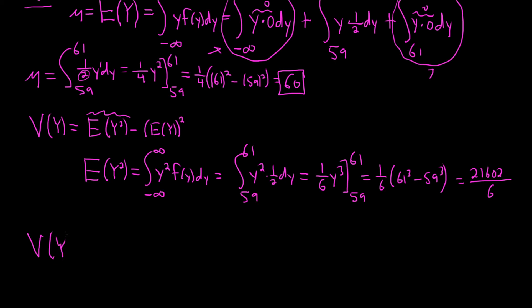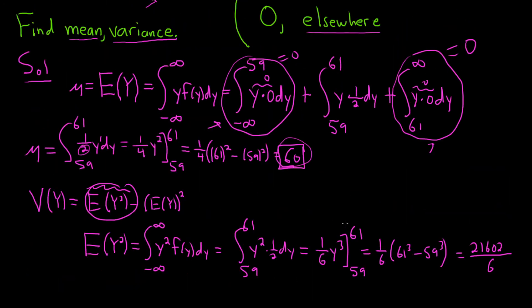Now for the variance, it will be this piece here, which we worked out as 21602 over 6, minus the expected value of y, that whole thing squared, so 60 squared. I'm going to resort to the calculator. So 21602 divided by 6 minus 60 squared. I ended up with a very big number, I feel like I have an extra zero here. Hold on, messed up here. Can't be that big. There we go, feels better. 0.33. So this is a repeating decimal, 0.3 bar. So 1 third would be the variance.